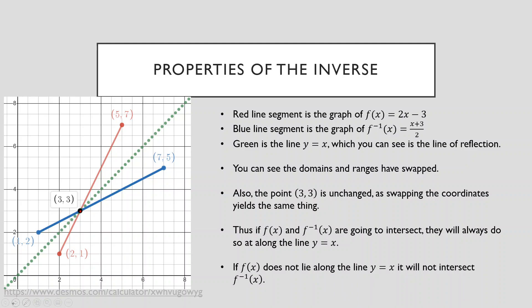If your original graph doesn't lie along this line y equals x — it doesn't intersect that line at all — then it will not intersect your inverse. So let's say I have a straight line that goes from there to there, and I try and find the inverse — the inverse is going to be reflected like that. But because our original graph does not intersect the line y equals x, that means our inverse is not going to intersect the line y equals x. And so therefore, they can't possibly intersect each other, because the only place that they could intersect each other was somewhere along this green dotted line y equals x.